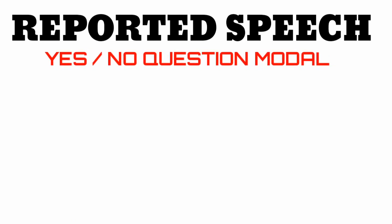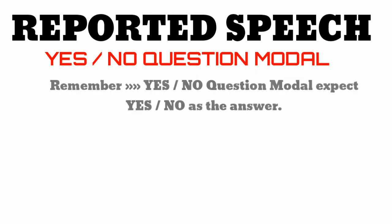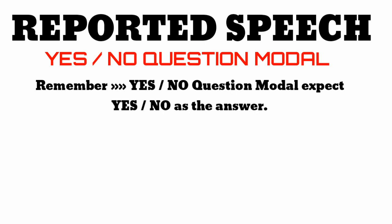A SORNO question model differs from a WH question. In a SORNO question model, the question begins with an auxiliary verb. The auxiliary verb list in the SORNO model includes: am, is, are; do, does, did; has, have; will, shall, can; may, must, and so on. Remember, the SORNO question model expects yes or no as the answer.